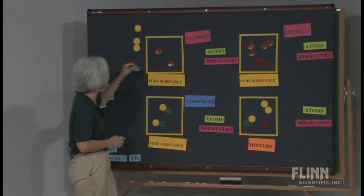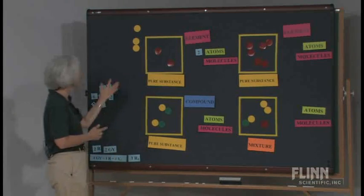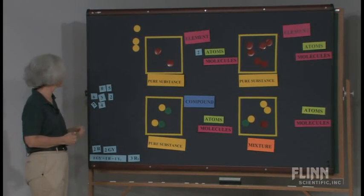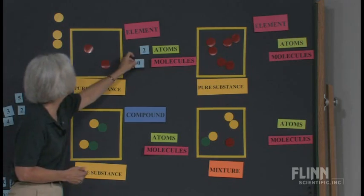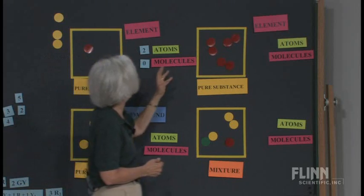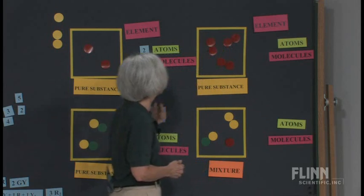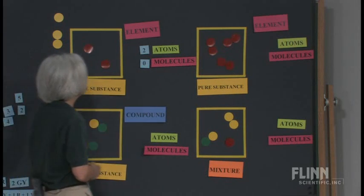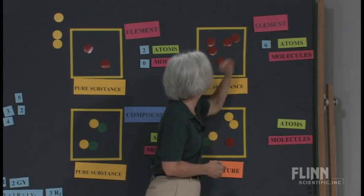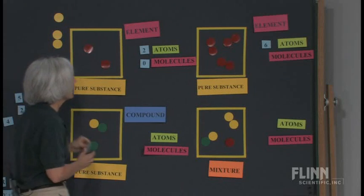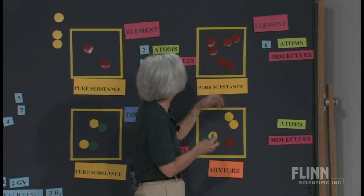All right. So let's count here. We have two atoms. Do we have any molecules in here? No. So we're going to put a zero here. When we go over to this one, again, it's pretty easy for them to figure out the atoms because they can just count up the circles. So obviously, we have six atoms and we have three molecules.